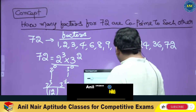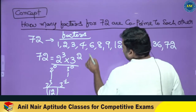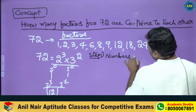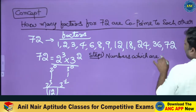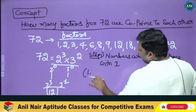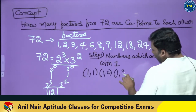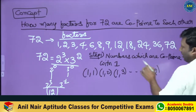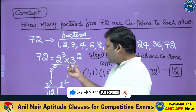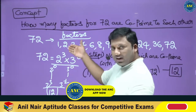What is the question? First, read the question: how many distinct factors of 72 are co-prime to each other? Step number 1: numbers which are co-prime with 1. Since 1 is co-prime with every other number — 1 with 1, 1 with 2, 1 with 3, and so on up to 1 with 72 — that gives us all 12 factors.